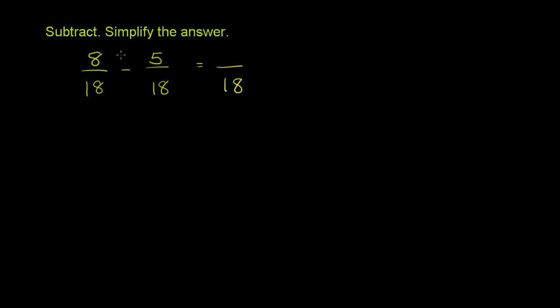Our numerator is going to be the difference between the numerators. So in this case, it is 8 minus 5. And this will be equal to 3 over 18.